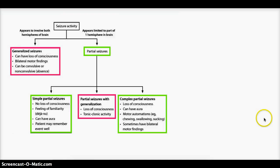Now coming to complex partial seizure. Again, there is loss of consciousness in this. The patient can again have aura. But there is a very peculiar characteristic of complex partial seizure, and this is called motor automatisms. This is basically, while patient is seizing, he can have these actions accompanying his seizure. That could be chewing, swallowing, sucking. Such actions are called motor automatisms. Sometimes the motor findings could also be bilateral.